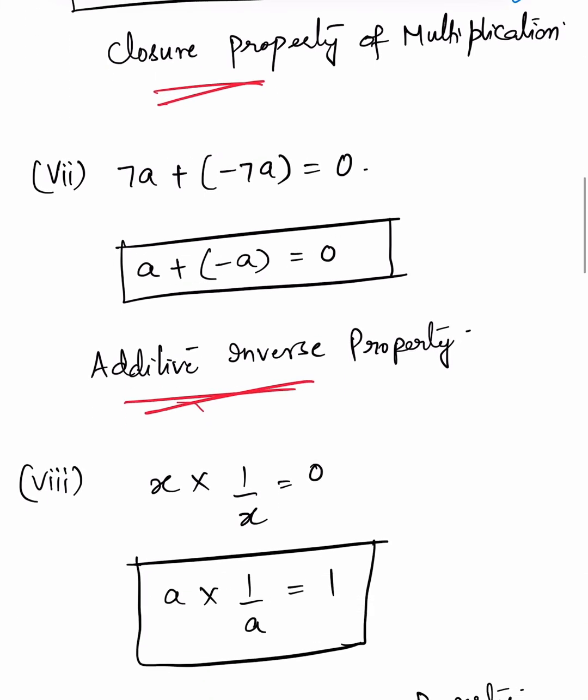7a + (-7a) = 0. That is, a + (-a) = 0. If two numbers are added and we get their sum as 0, then they are called additive inverses of each other. So, -a is the additive inverse of a, and a is the additive inverse of -a. Therefore, a + (-a) = 0. This is the additive inverse property.